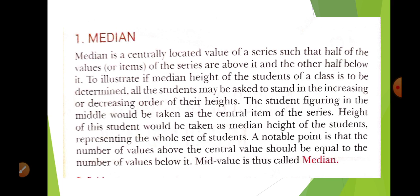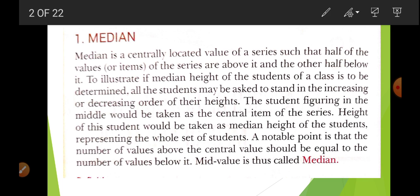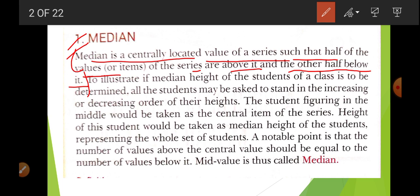So what is median? Median means the value that occurs in the middle. What is written in your book? Median is a centrally located value of the series, such that half of the values of the series are above it and the other half below it. It is centrally located — that is, the value which comes in the middle of the series, dividing the whole series into two equal parts. This mid value is known as the median.